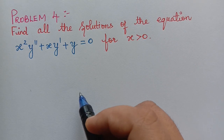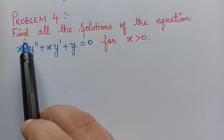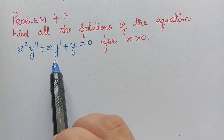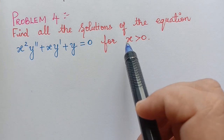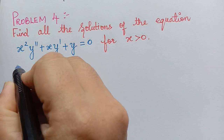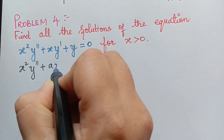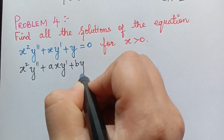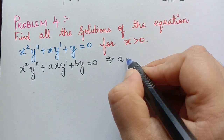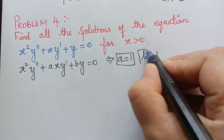Under the topic Euler equation, find all the solutions of the equation x² y'' + x y' + y = 0 for x > 0. We compare this with Euler's equation x² y'' + a·x y' + b·y = 0, and from this we get a = 1 and b = 1.